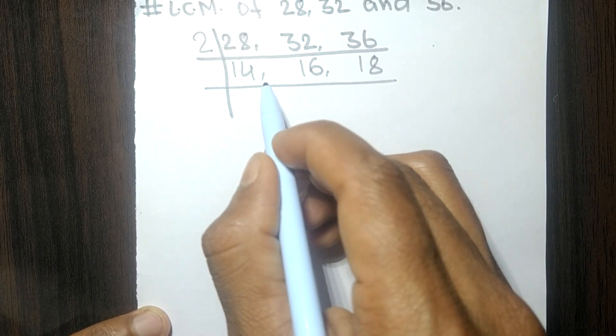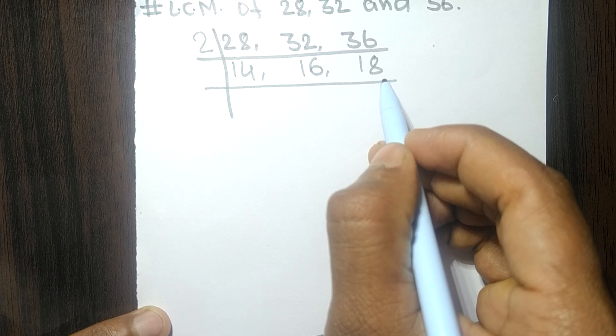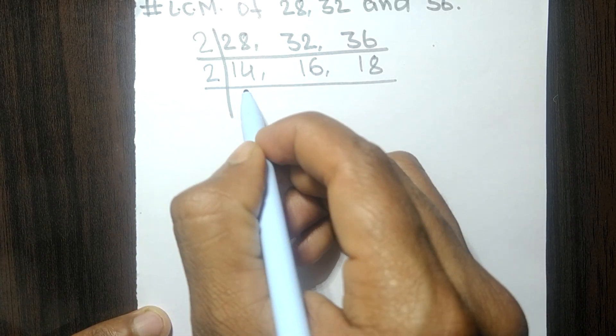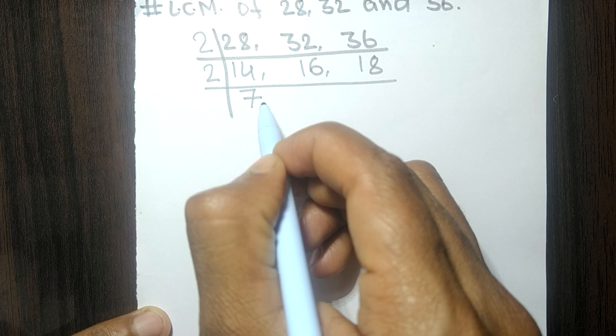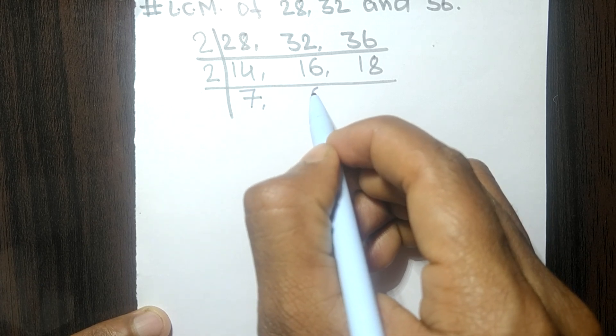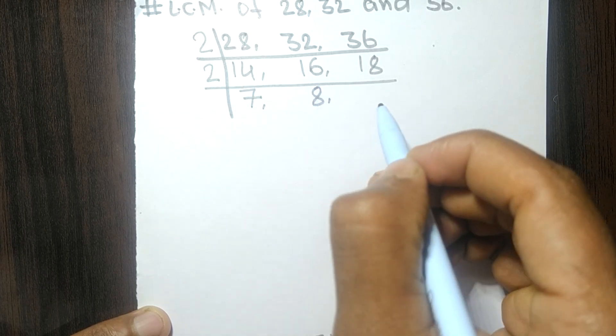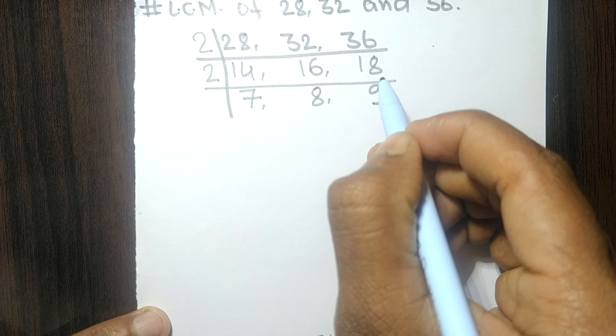Again, these all numbers are exactly divisible by 2, so 2 times 7 means 14, 2 times 8 means 16, 2 times 9 means 18.